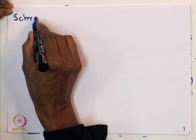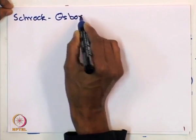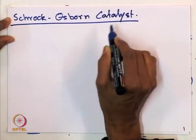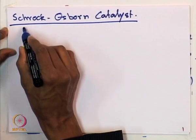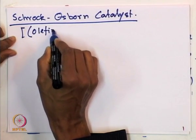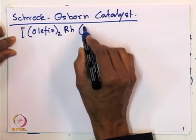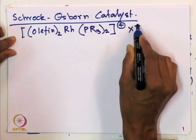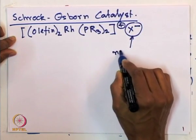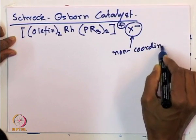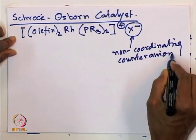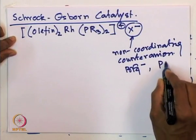The Schrock-Osborne catalyst is a rhodium-based catalyst. The starting material is important to understand. We will have two olefins, a rhodium center, and two alkyl phosphines (PPh3 × 2), plus X minus as the counter anion. This counter anion is a non-coordinating counter anion — those could be BF4 minus, PF6 minus, and so on.